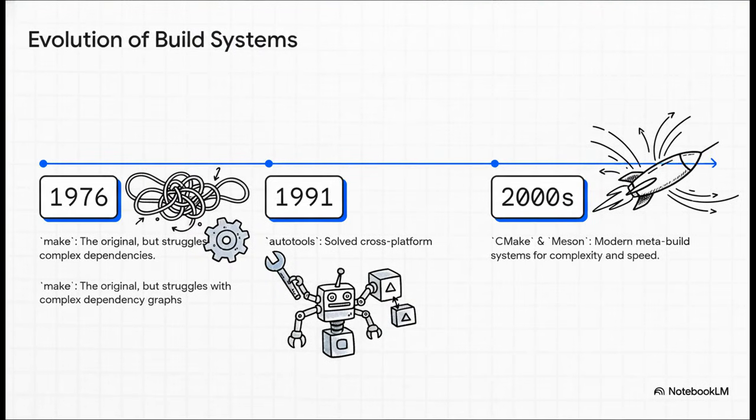And the evolution here is pretty interesting. The story really starts way back in the 70s with make. It was the original, but it really struggled with complex dependency graphs. Then came autotools, which was amazing because it solved cross-platform builds, but man, it was notoriously difficult to use. And that brings us to today, where we have these modern meta-build systems like CMake and Meson, which are just on another level.